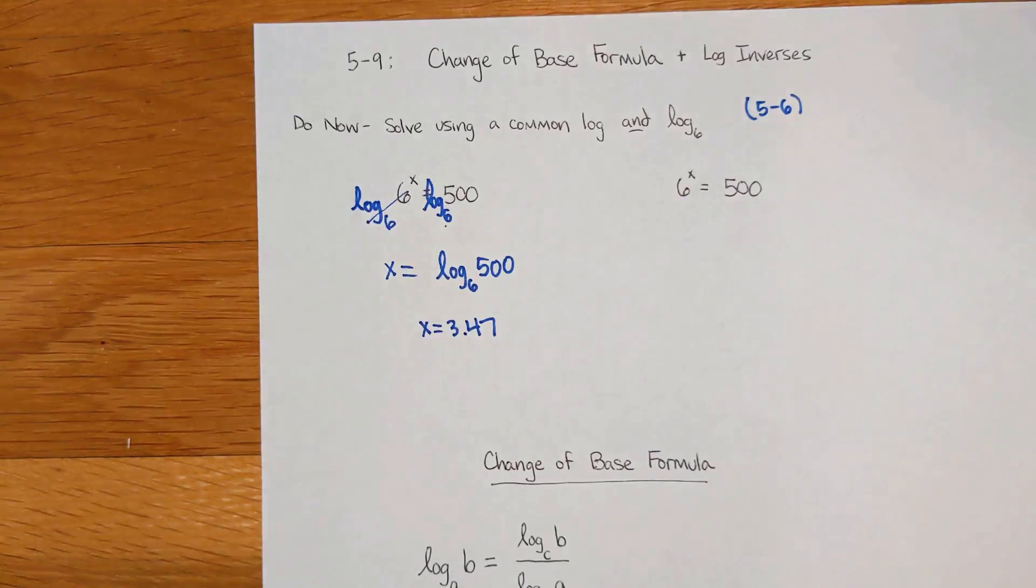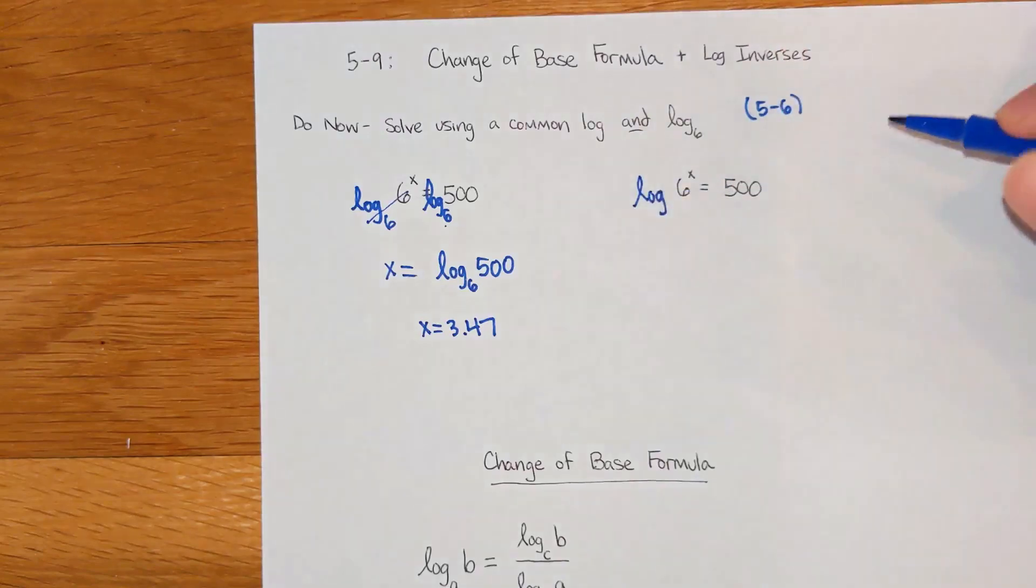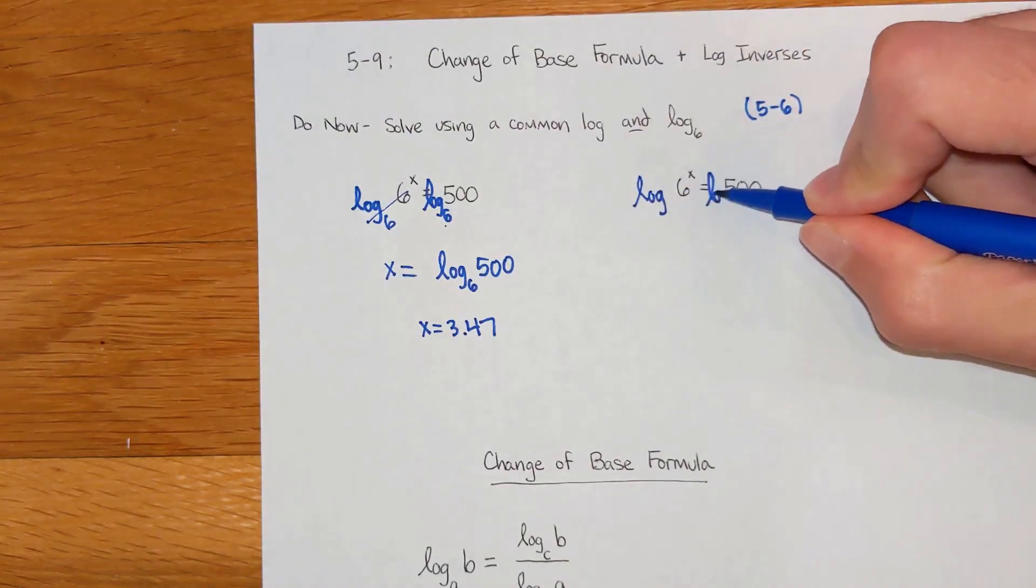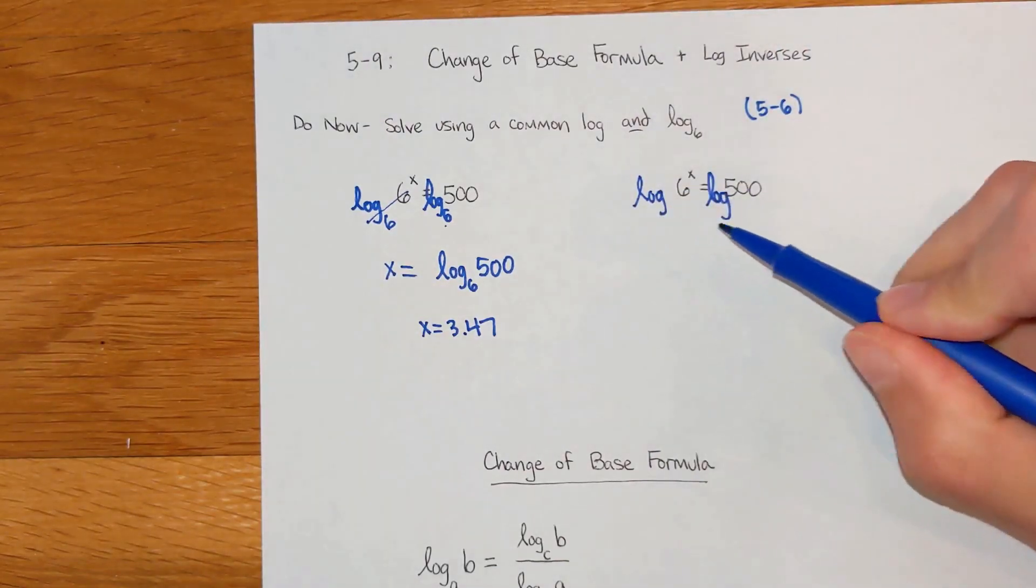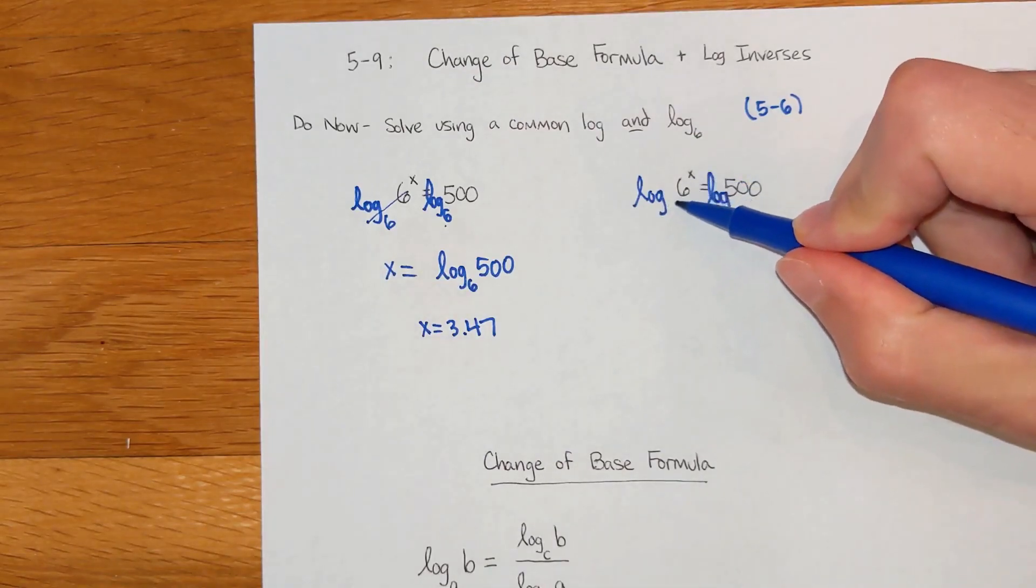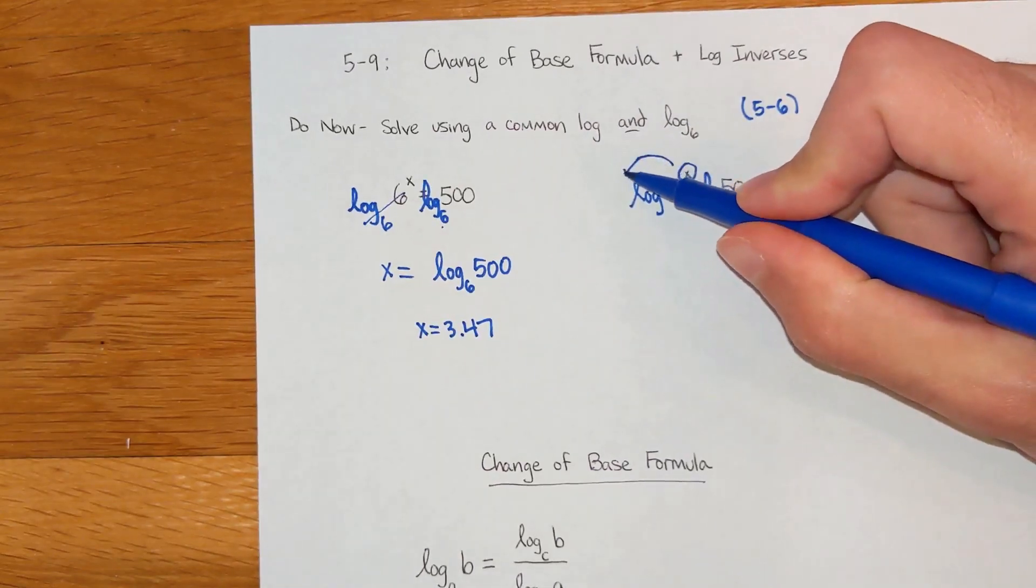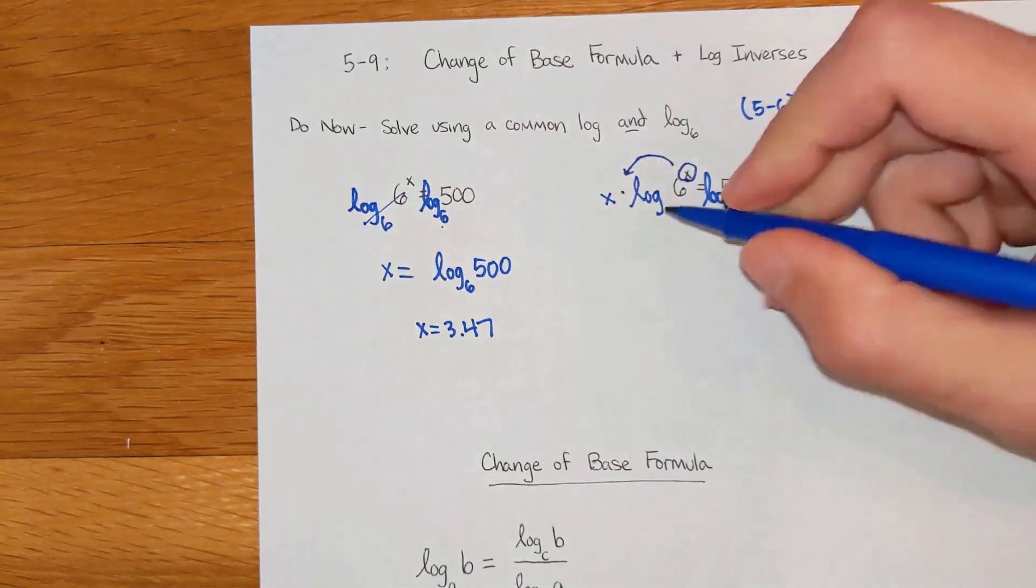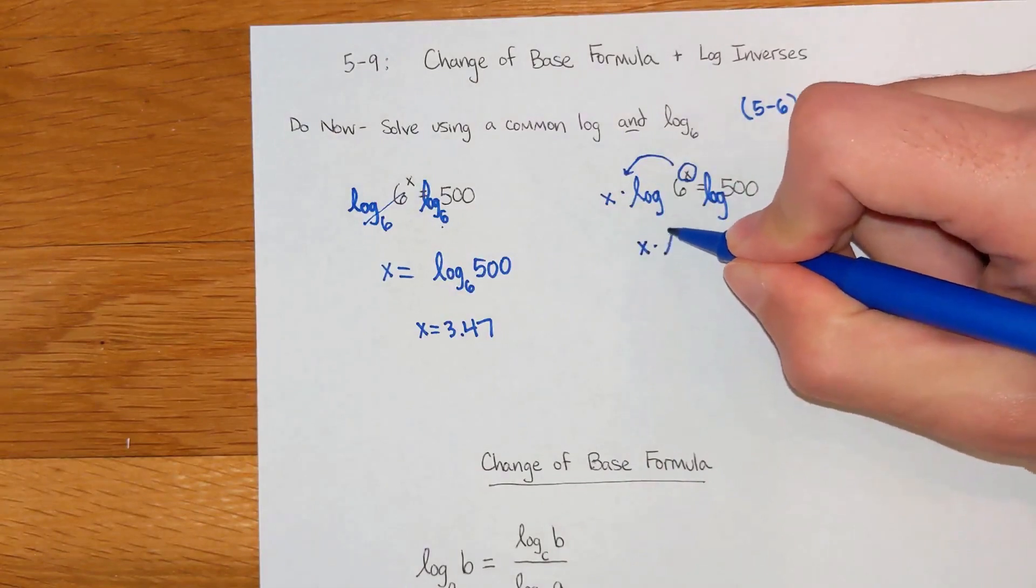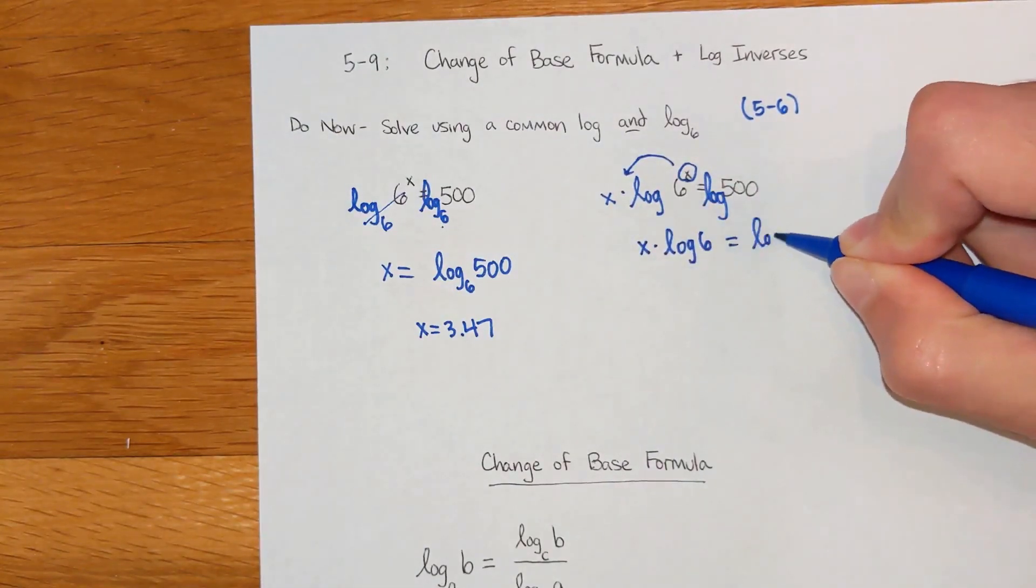But I also showed you a second way to solve log problems, and it involved using just the common log, so a log base 10 on both sides. If you do it this way with the log base 10, these don't cancel right away. You have to take your exponents and drag them to the front and multiply. So I end up with x times log 6 equals log 500.